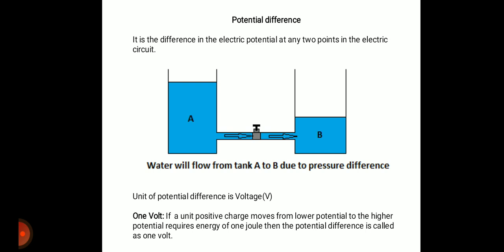What is one volt? If a unit positive charge moves from a lower potential to a higher potential and requires energy of 1 joule, then the potential difference is called one volt. To understand one volt: take a unit positive charge and move it from lower potential to higher potential — if the energy required is 1 joule, the potential difference is one volt.